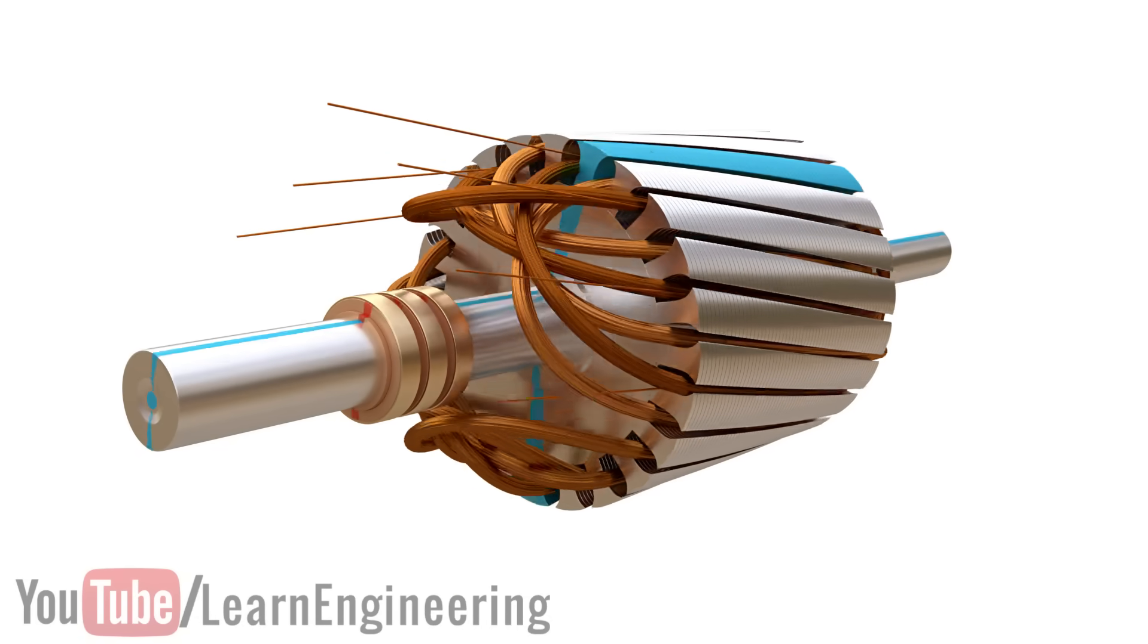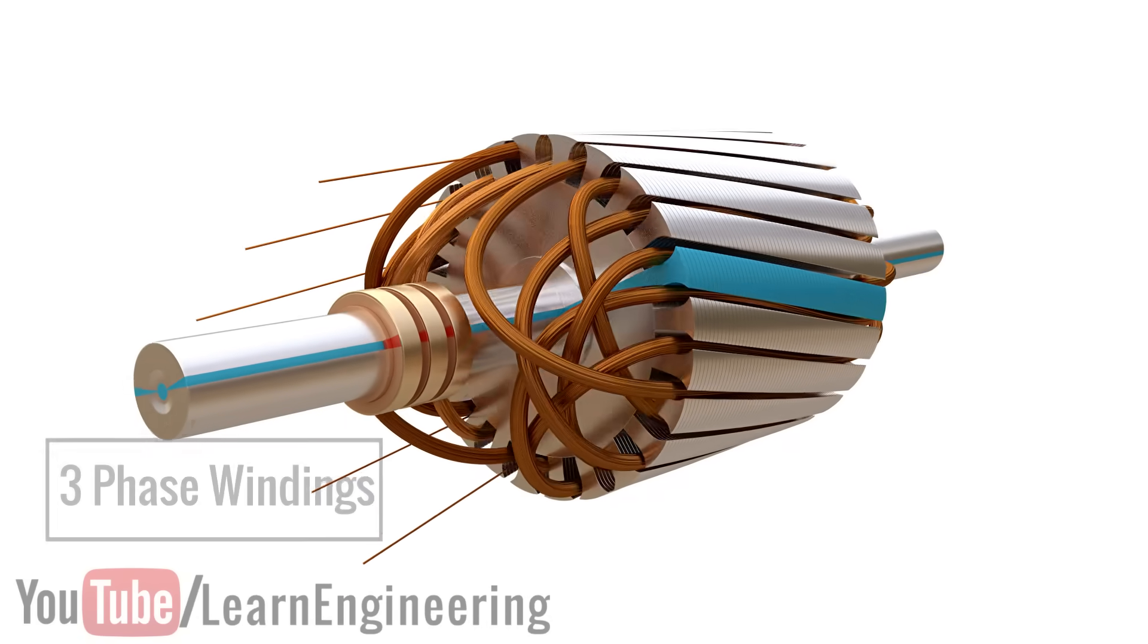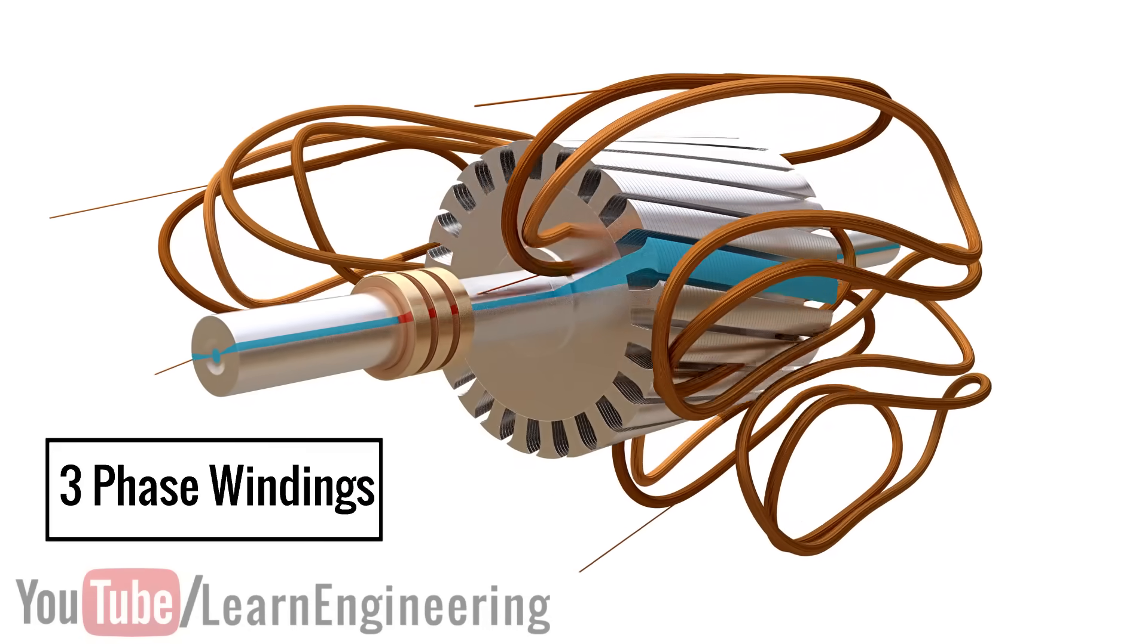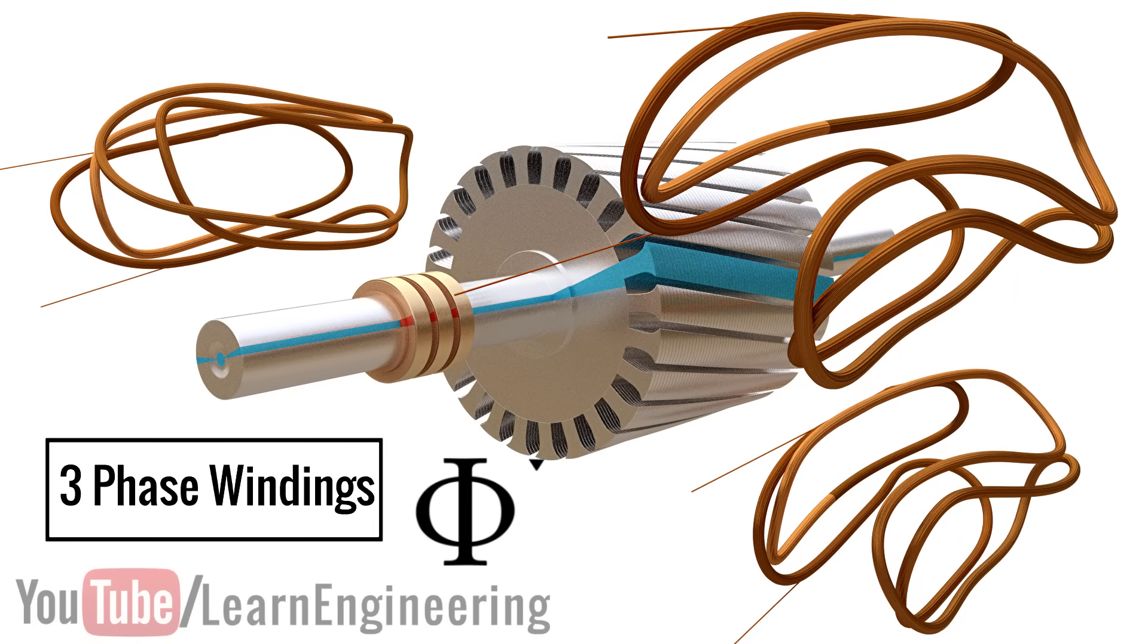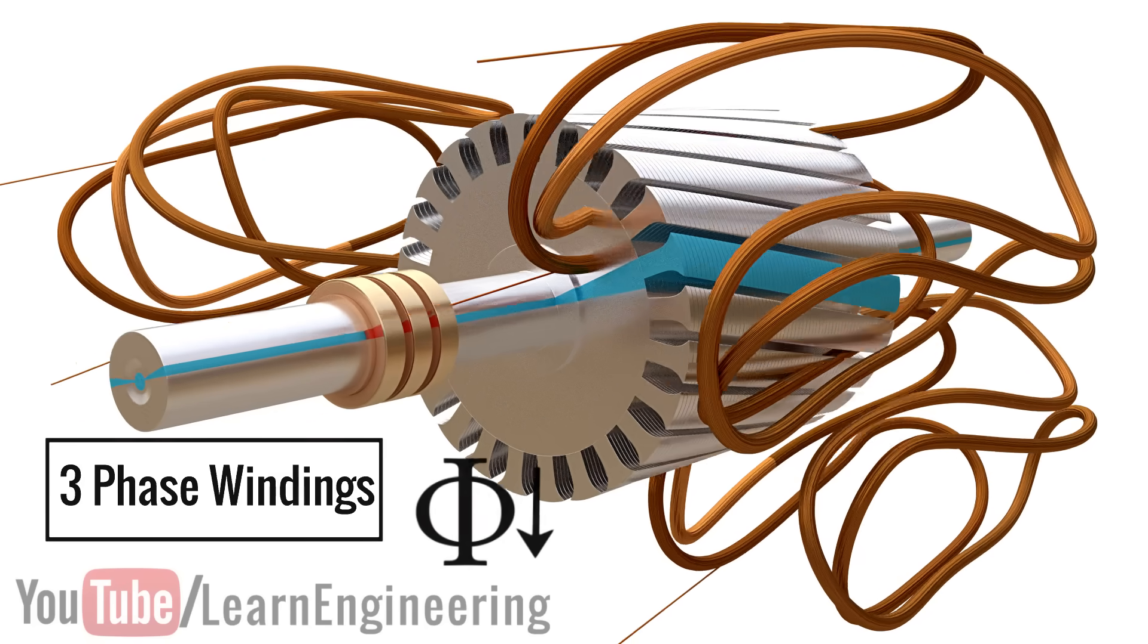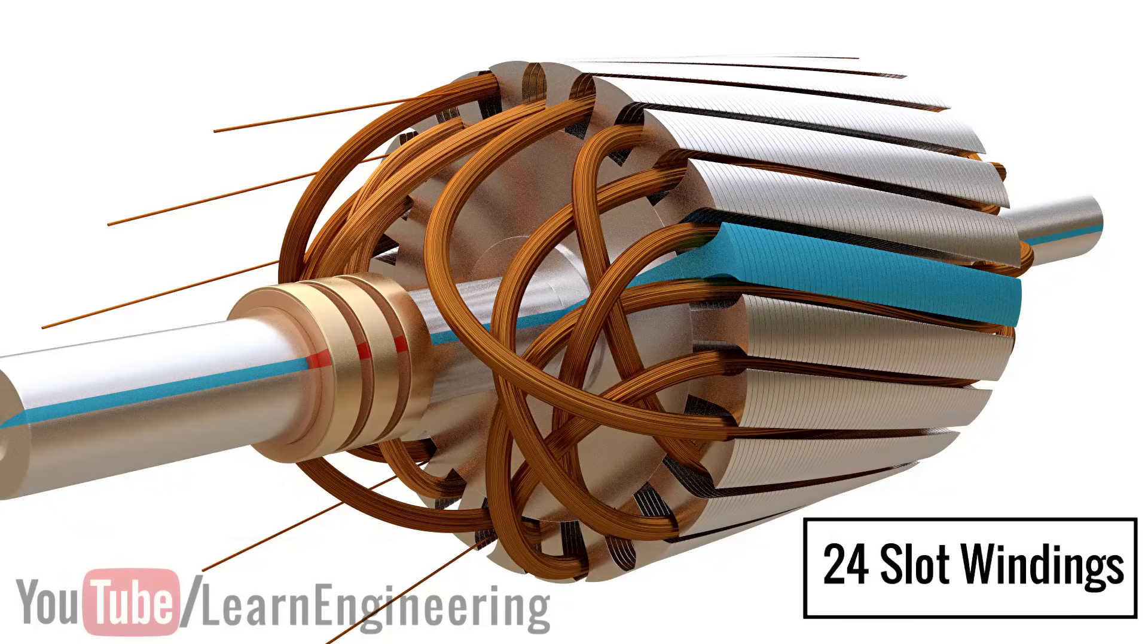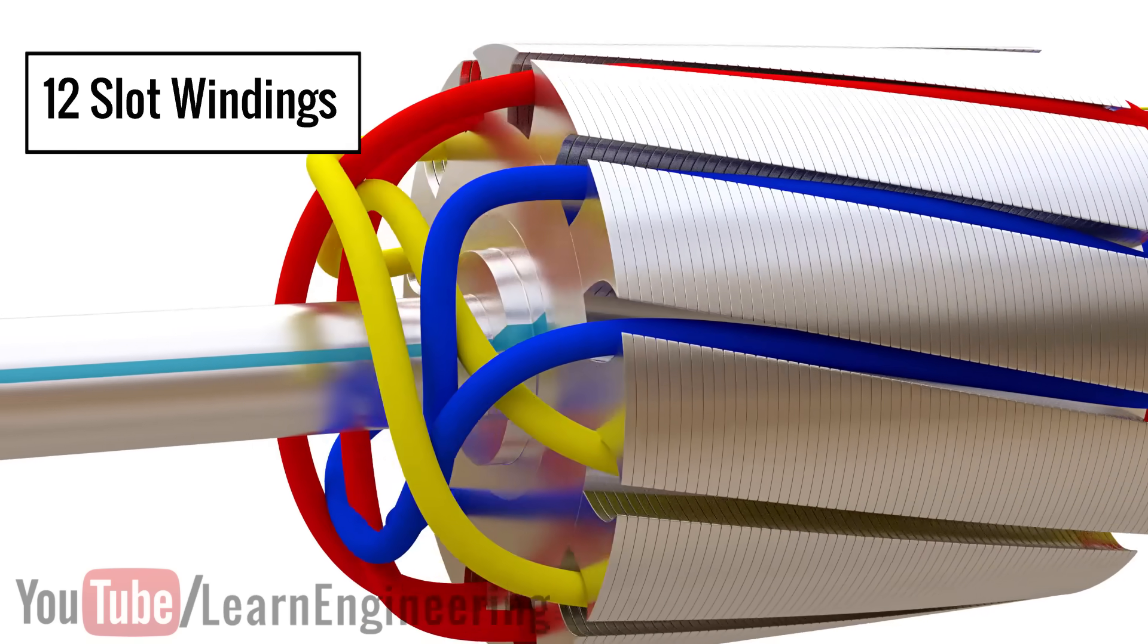Instead of bars, in this motor three windings are used. This construction of the rotor is aimed at reducing the phase difference. Let us see how a squirrel cage rotor does it. For ease of understanding, instead of the current 24-slot winding, let us use a 12-slot winding.